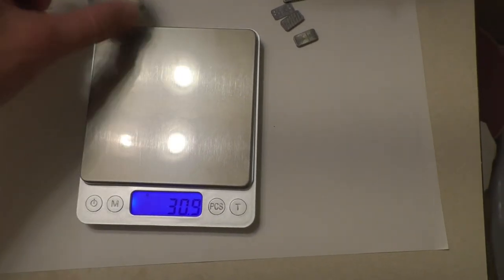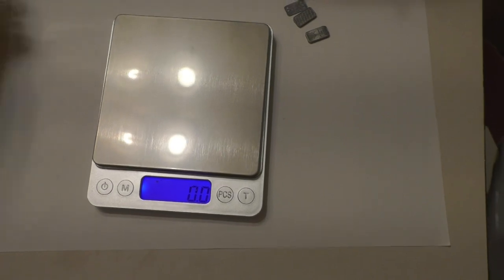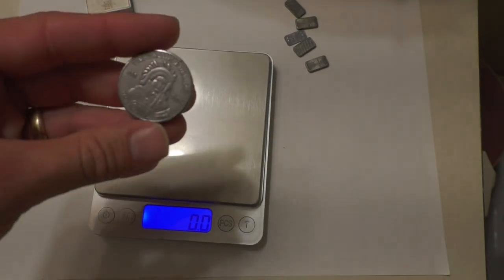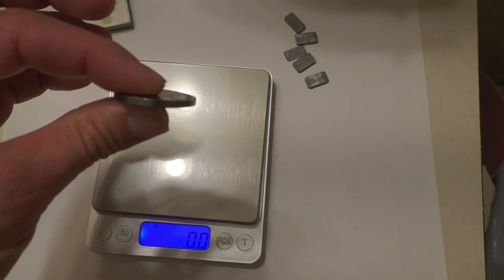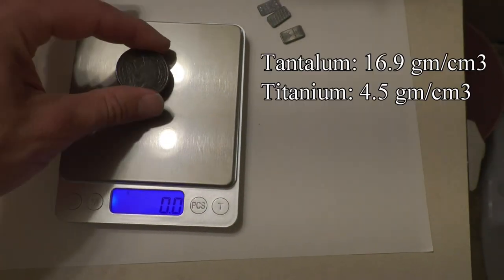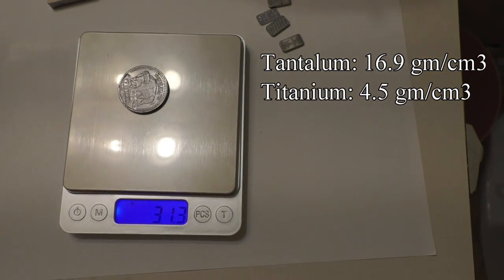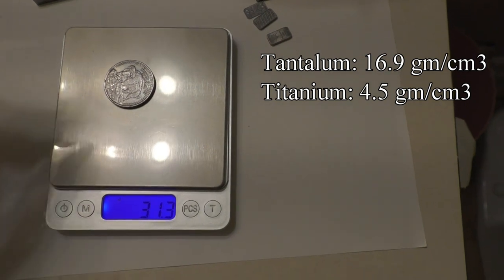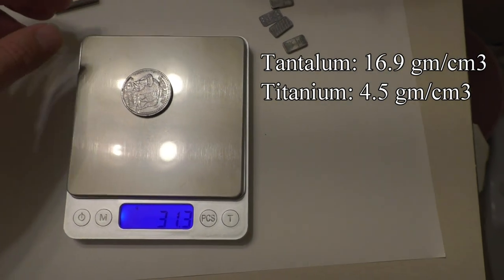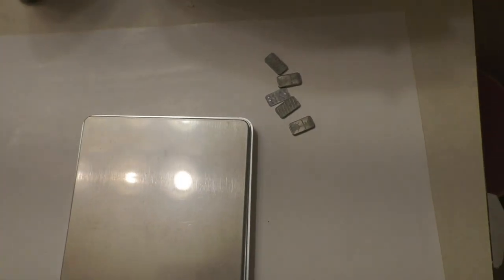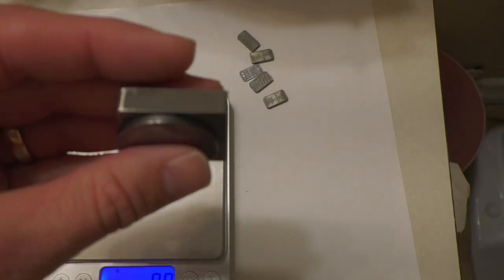Now let's compare the weight of the tantalum bar, which is much smaller and takes up less space, but still weighs the same as the titanium bar. The density of tantalum is 16.9 grams per cubic centimeter compared to titanium's 4.5 grams per cubic centimeter. Tantalum is four times more dense than titanium.